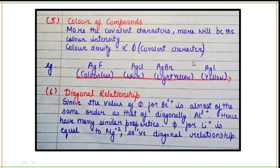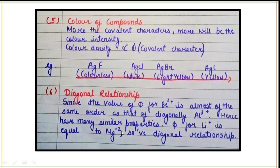The next point is diagonal relationship. Many elements show diagonal relationships with each other in the periodic table because they have the same value of phi. For example, the value of phi for Be²⁺ is almost the same order as for the diagonally placed Al³⁺, hence they have many similar properties. Similarly, phi for Li⁺ is equal to that of Mg²⁺, which is why they show diagonal relationships and have some similar properties.